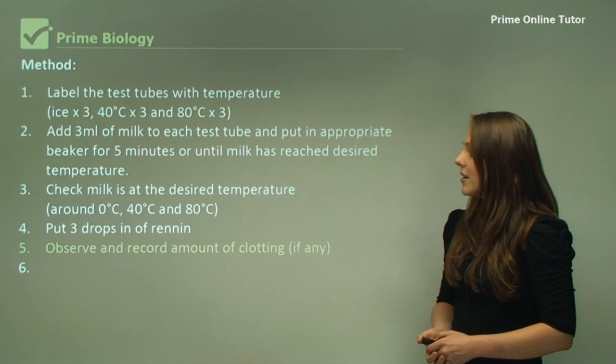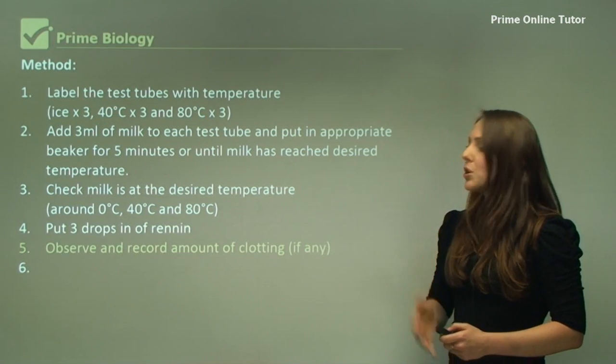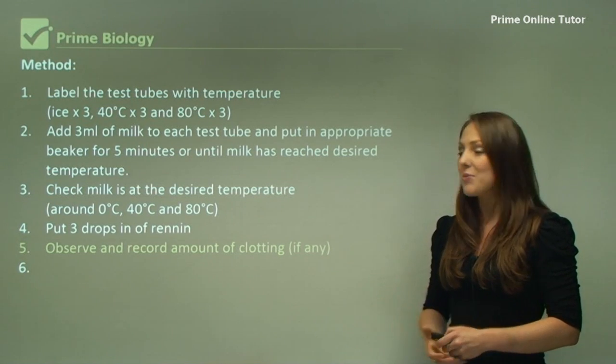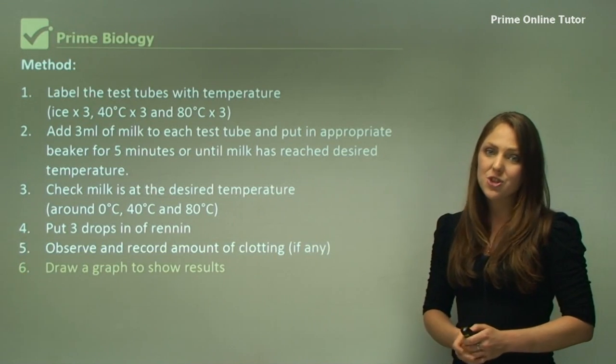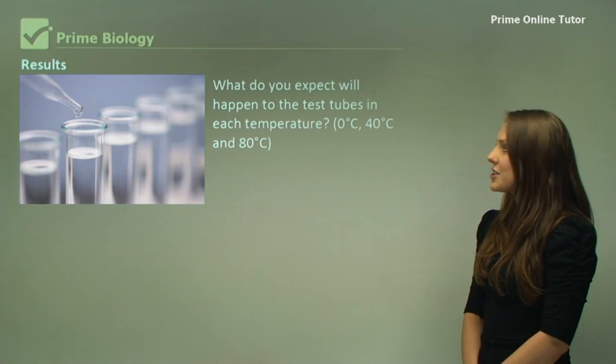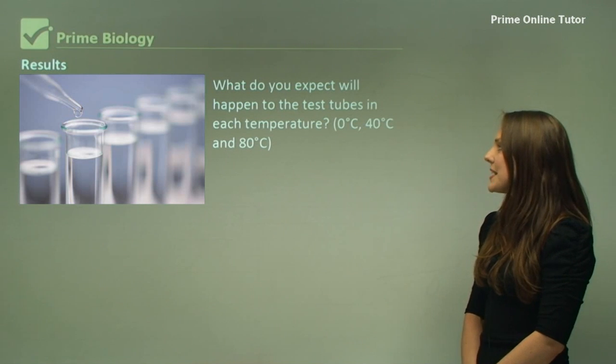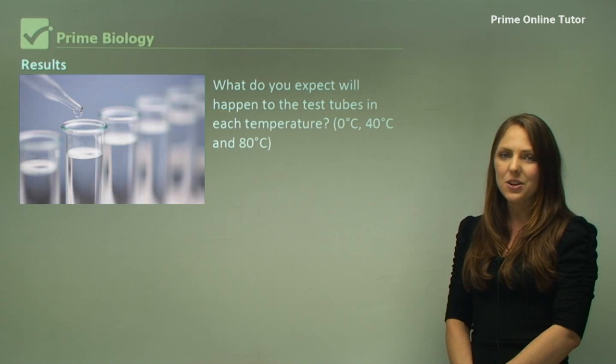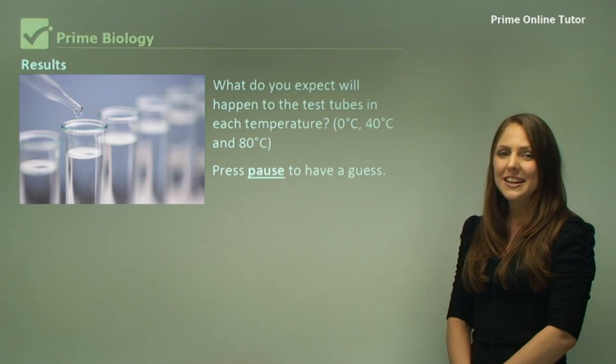Observe and record the amount of clotting, if any. You may not get clotting in some environments. Draw a graph to show your results. Now your results: what do you expect will happen to the test tubes in each temperature at zero degrees, 40 degrees, and 80 degrees Celsius? Press pause here and have a guess.